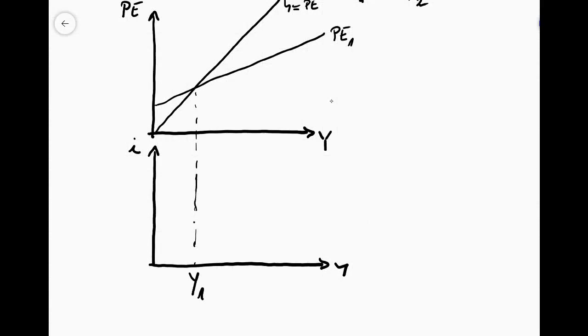Now here also we can assume that this equilibrium happens at a certain interest rate, for example I1. So this must be then one point along the IS curve.